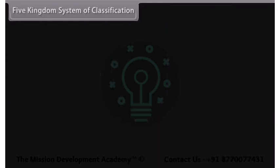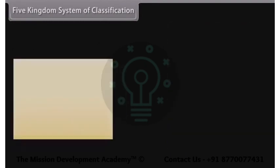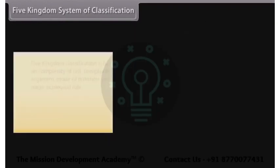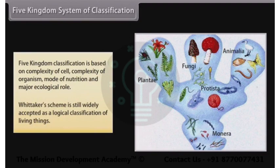In 1969, American ecologist Robert H. Whittaker proposed that fungi differ enough from other microorganisms to justify calling them a separate kingdom. This led to a Five Kingdom scheme of classification comprising Monera, Protista, Fungi, Plantae, and Animalia. Five Kingdoms classification is based on complexity of cell, complexity of organism, mode of nutrition, and major ecological role. Whittaker's scheme is still widely accepted as a logical classification of living things.